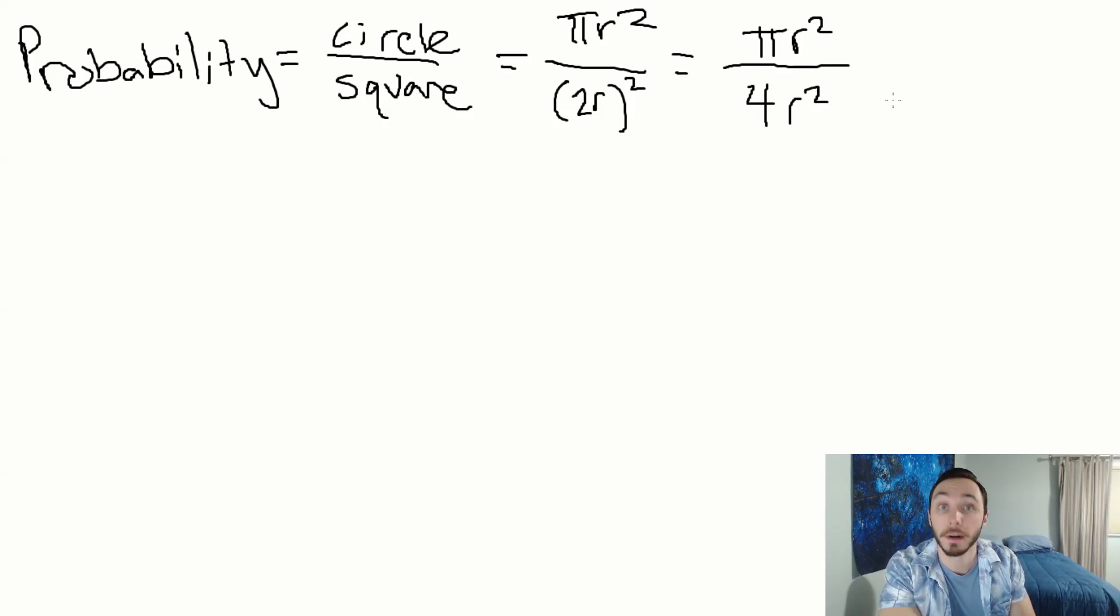My probability is pi R squared over 4R squared. The radius ultimately doesn't matter. We can make this radius as big or as small as we want because these are going to cancel. The probability equals pi over 4.